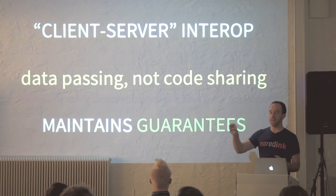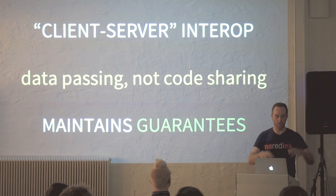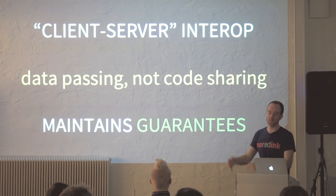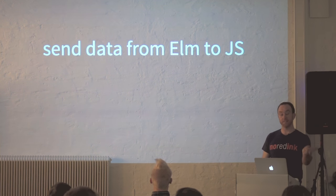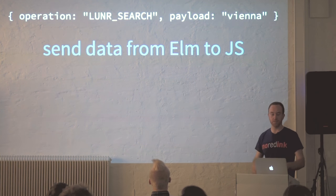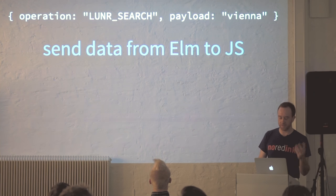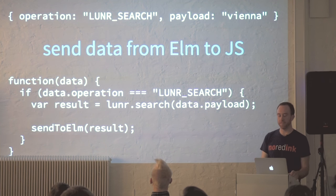As opposed to code sharing, where we could have some Elm code that secretly calls a JavaScript function — which means that when we're debugging, we can have this guarantee that all of our Elm code is reliable. If we do get a crash, we generally know exactly where to look: it's on the JavaScript side. Here's an example of how we send data from Elm to JavaScript. We might write down an operation like LunrSearch with a payload of 'Vienna' because we want to do a full-text search for Vienna. On the JavaScript side, we'd have a function that receives this data from Elm and runs arbitrary JavaScript code — say, data.operation is LunrSearch, call lunr.search passing in the payload, get the result back, and then send that back over the fence to Elm. That's the basic idea of interop via ports.